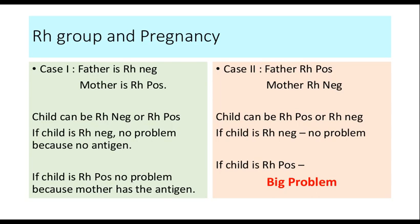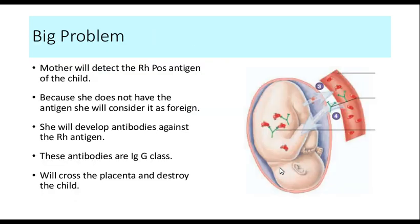Now let's look at Case 2, when the father is Rh positive and the mother is Rh negative. The child could be Rh positive or negative. If the child is Rh negative, there is no problem. But if the child is Rh positive and the mother is Rh negative, we have a potential for a big problem. The mother will detect the Rh positive antigen in the child, consider it as foreign, and develop antibodies against it. The antibodies are IgG in class and can cross the placenta to destroy the child.